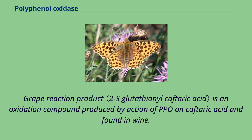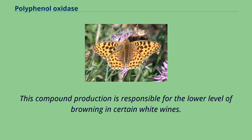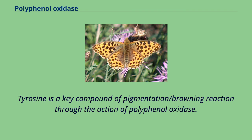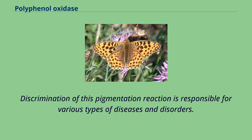Grape reaction product is an oxidation compound produced by action of PPO on cafteric acid and found in wine. This compound production is responsible for the lower level of browning in certain white wines. Plants make use of polyphenol oxidase as one in a suite of chemical defenses against parasites. Tyrosine is a key compound of pigmentation/browning reaction through the action of polyphenol oxidase, and disruption of this pigmentation reaction is responsible for various types of diseases and disorders.